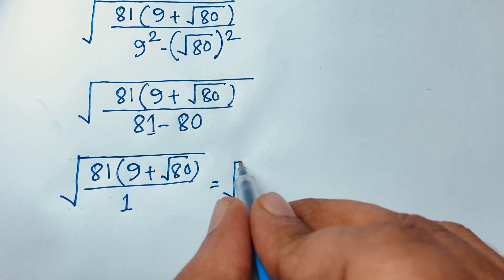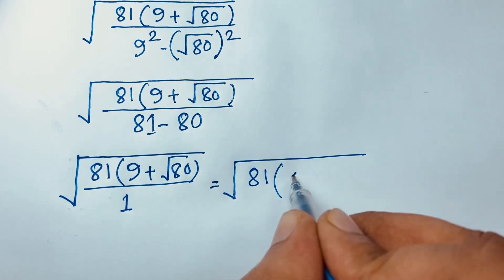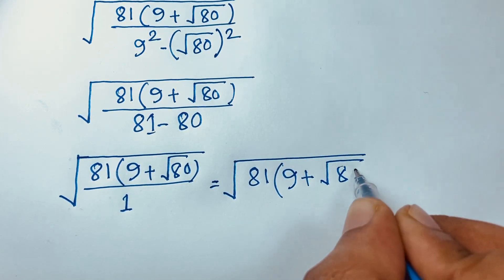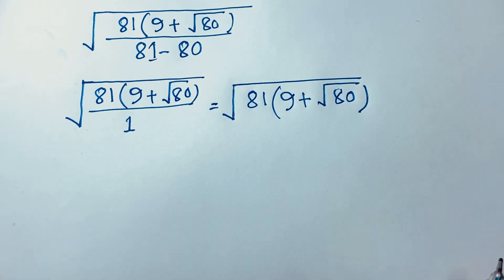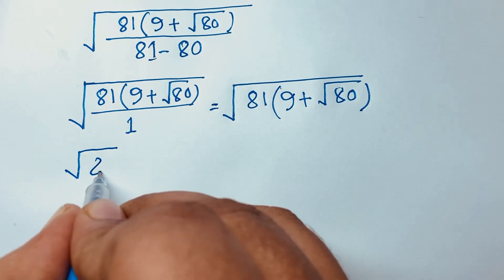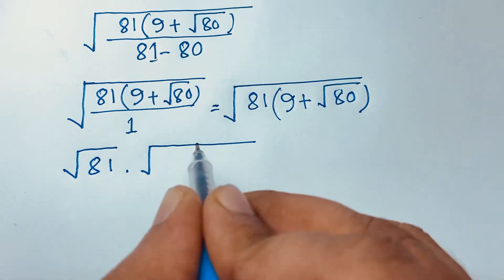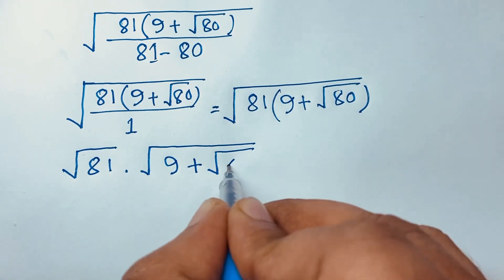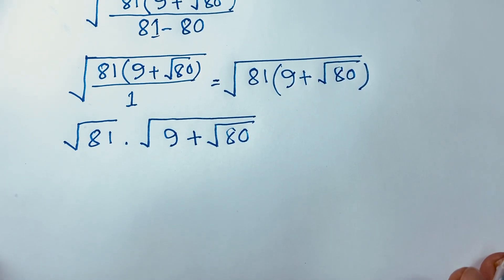So we are finding square root of 81 times (9 plus square root 80). This simplifies to square root 81 times square root of (9 plus square root 80).